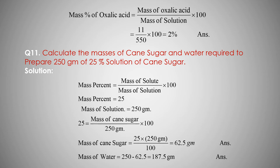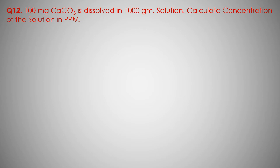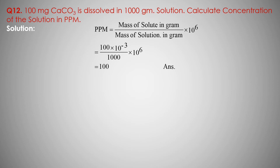Mass of water is 187.5 grams. Question complete. Next question number 12: 100 mg of calcium carbonate is dissolved in 1000 gram solution. Calculate the concentration of the solution in ppm — parts per million. PPM concentration formula: mass of solute in gram upon mass of solution in gram into 10 to the power 6 ppm.